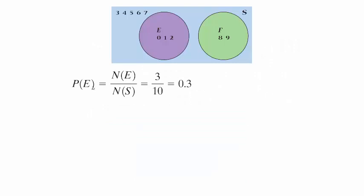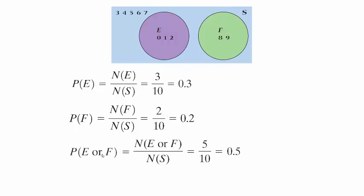Let's compute some probabilities. The probability of event E is the number of ways E can occur divided by the number of things in the sample space — 3 divided by 10, which is 0.3. The probability of event F is 2 divided by 10, which is 0.2. The probability that E or F happens is 5 divided by 10, which equals 0.5. You can also get this by addition: 0.3 plus 0.2 equals 0.5.